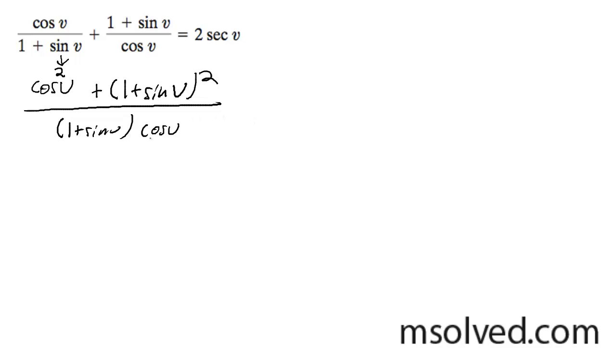So I'm going to FOIL this out. This becomes cosine v plus 1 plus 2 sine v plus sine squared v, all over 1 plus sine v cosine v. And actually sorry, this should be cosine squared.